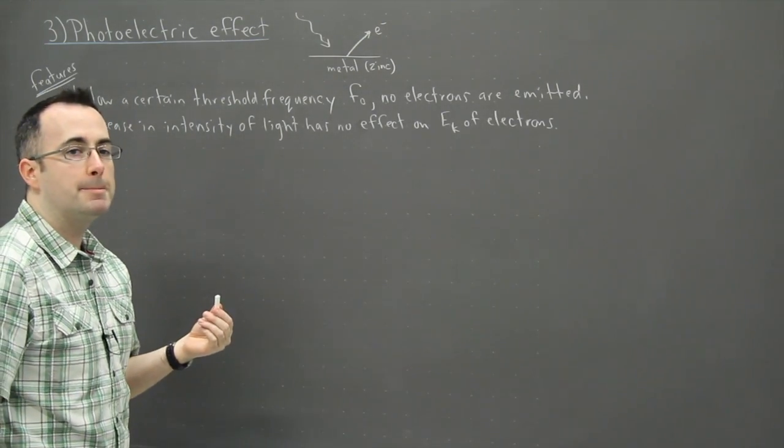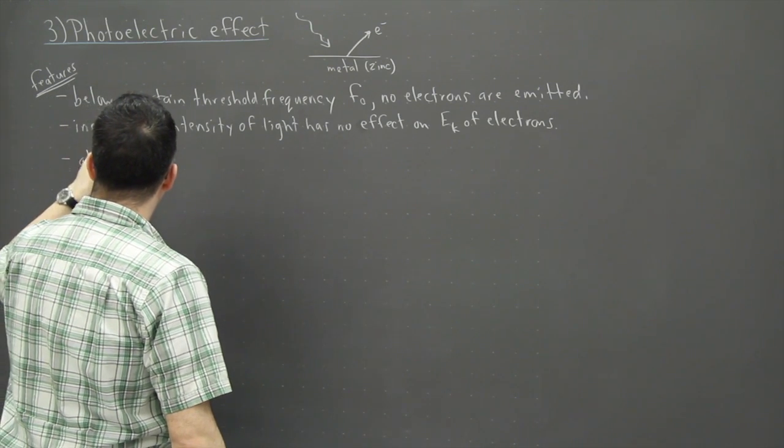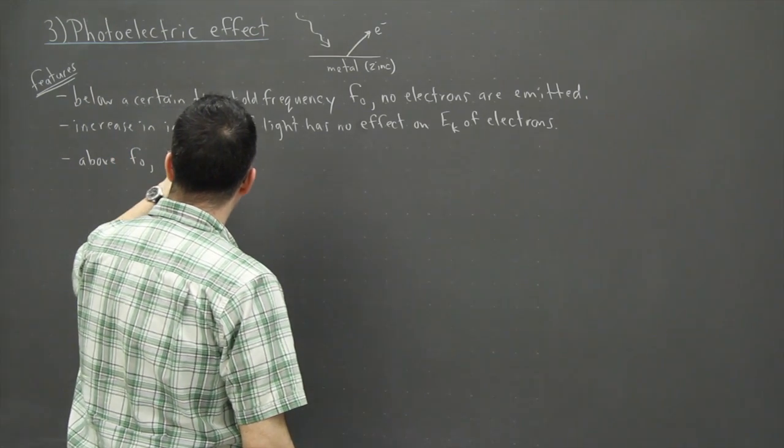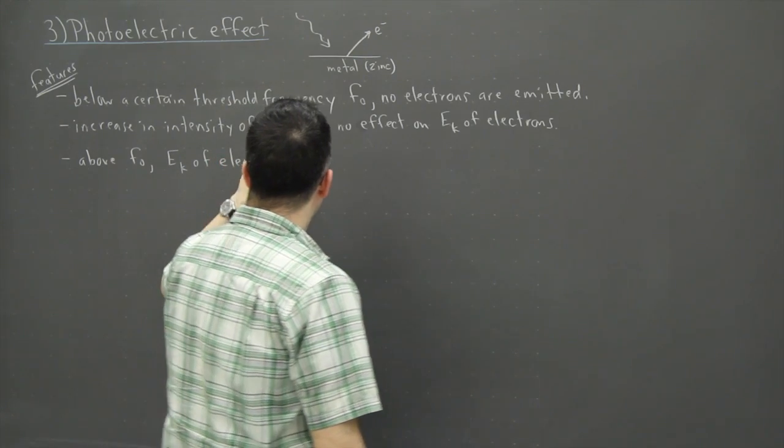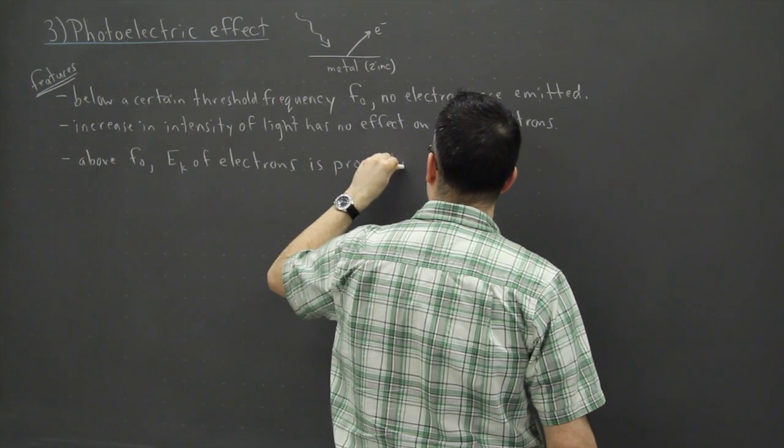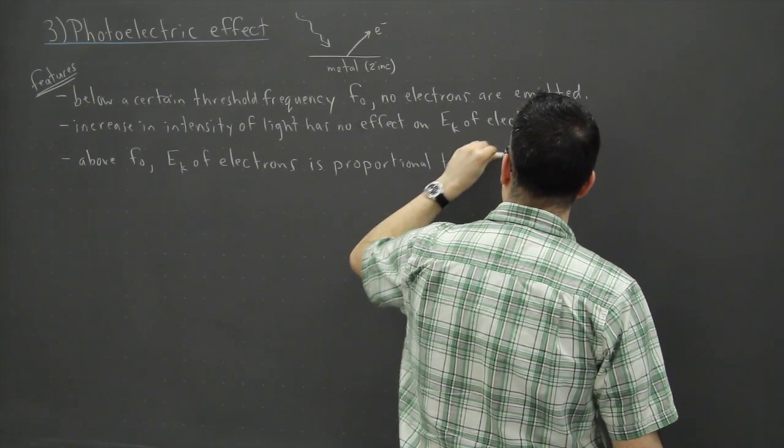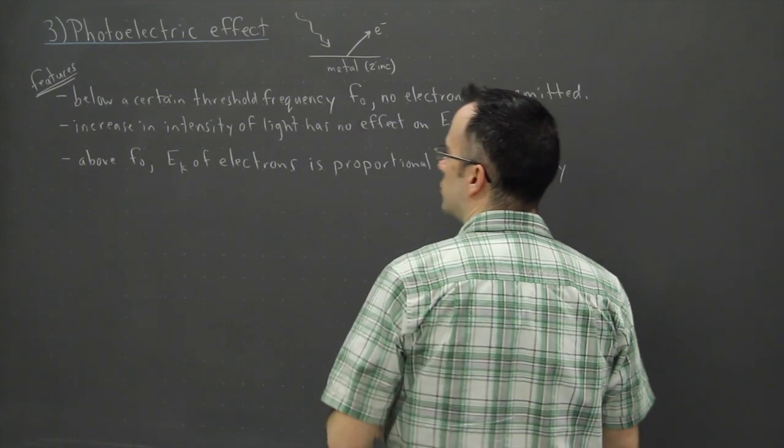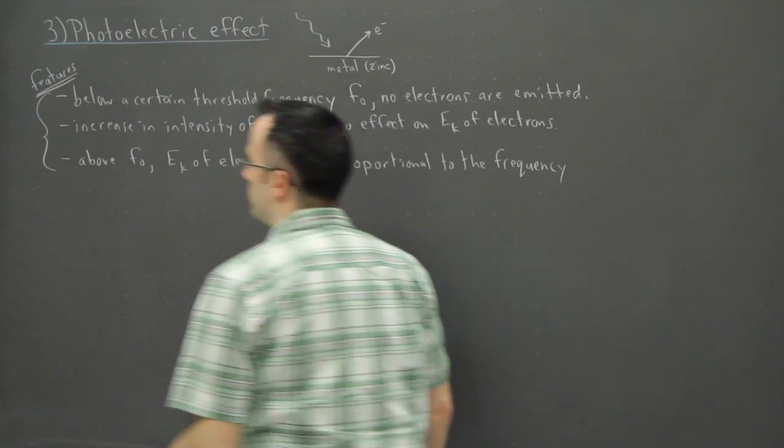And maybe I can say that above this threshold frequency, the kinetic energy of the electrons is proportional to the frequency. Now what that means, maybe I'll give you a little graph here, a little chart to show you this. So those are three features of photoelectric effect.